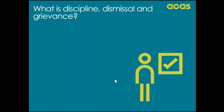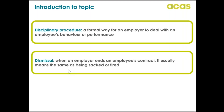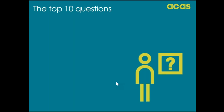We're going to be looking at the commonly asked questions on this topic, but firstly we thought it was a good idea to define what these terms mean. A disciplinary procedure is a formal way for an employer to deal with an employee's behaviour or performance. A dismissal is when an employer ends an employee's contract and it usually means the same as being sacked or fired. A grievance procedure is a formal way for an employee to raise a problem or complain to their employer and it could be verbal or written.